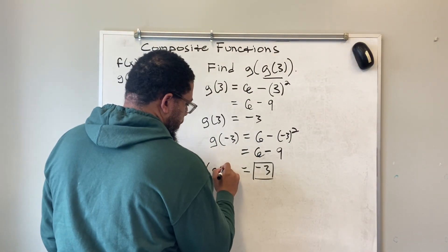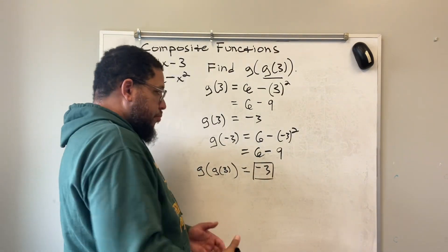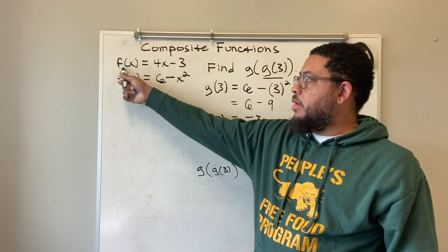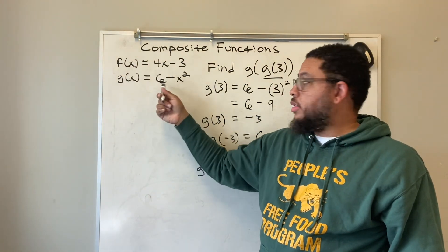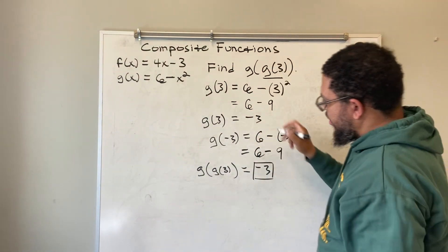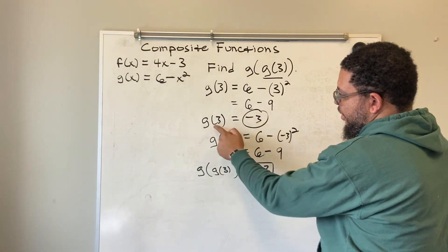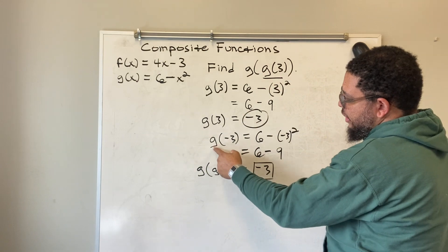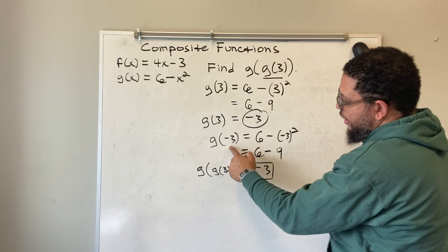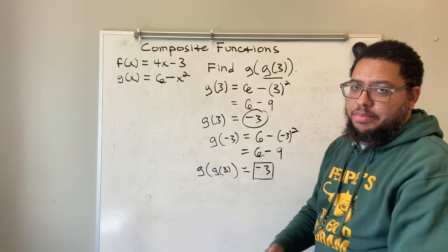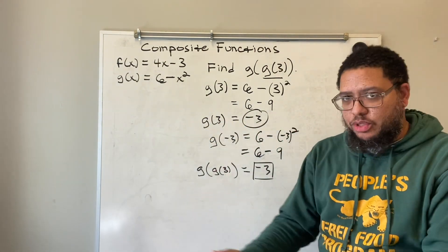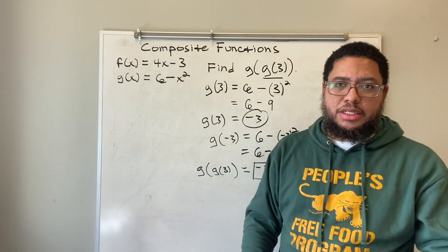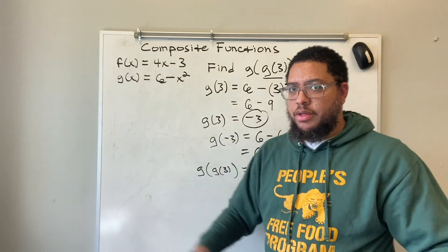G of g of 3 equals negative 3. What did I do? I worked inside out. I figured out what g of 3 was first using the g function. In this problem, f of x was irrelevant — we only worried about g. I got negative 3, and then since g of 3 and negative 3 are the same thing, I replaced the inner part with negative 3 and evaluated g of negative 3. When dealing with composite functions, we're just replacing stuff, then doing the math. Replace, then do the math — and we get negative 3.